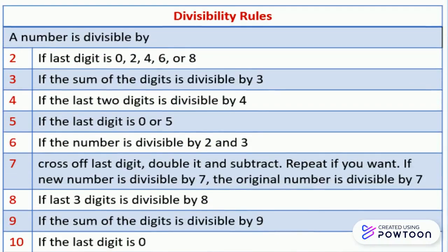Divisibility Rules. A number is divisible by 2 if the last digit is 0, 2, 4, 6, or 8. Divisible by 3 if the sum of the digits is divisible by 3.